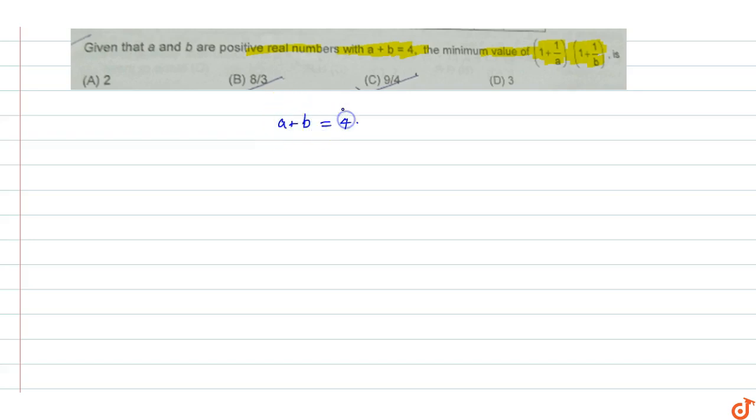By using the AM is greater than or equal to GM inequality, we can find the maximum value of ab. Using the property AM is greater than or equals to GM...